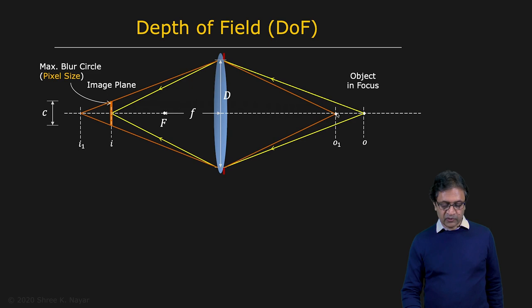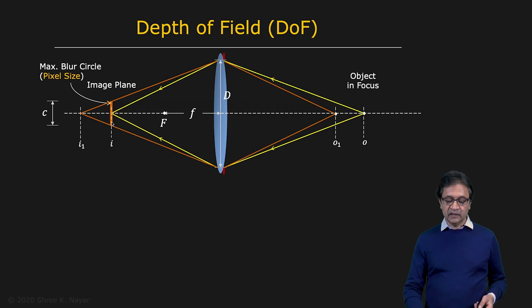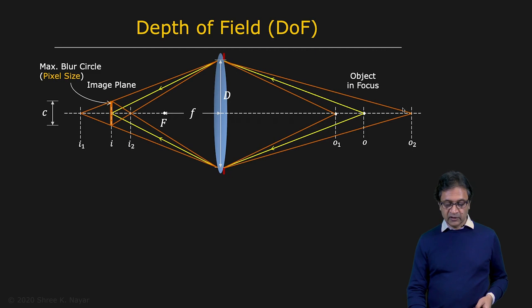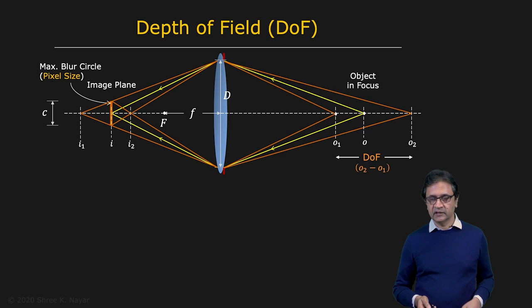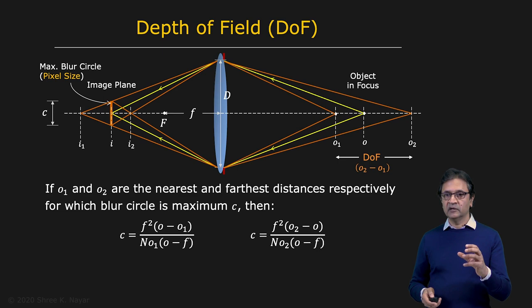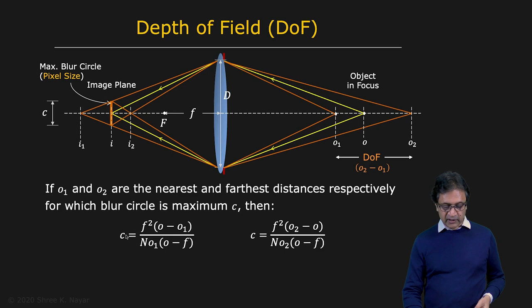Because O1 is in front of — closer to the lens than — the focused object O, the image is going to be formed behind the image plane with a blur circle of diameter C. There is another point O2, which is further away from the lens, where the image forms in front of the image plane but then diverges to create a blur circle of size C. O2 minus O1 is the depth of field of the imaging system.